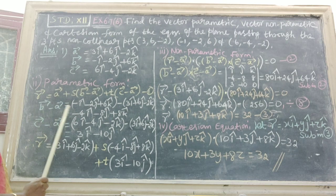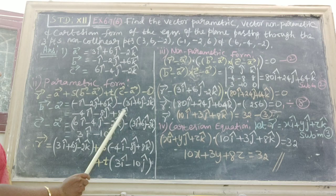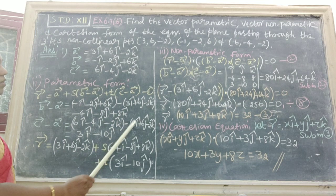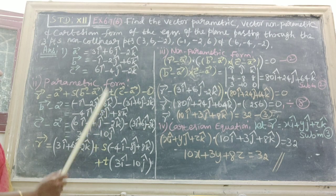To find B vector minus A vector, substitute B vector minus A vector, multiply by minus, then we get the answer. Similarly, we find C vector minus A vector, write down C vector minus A vector, multiply by minus. Therefore, we get the answer 3 I cap minus 10 J cap.